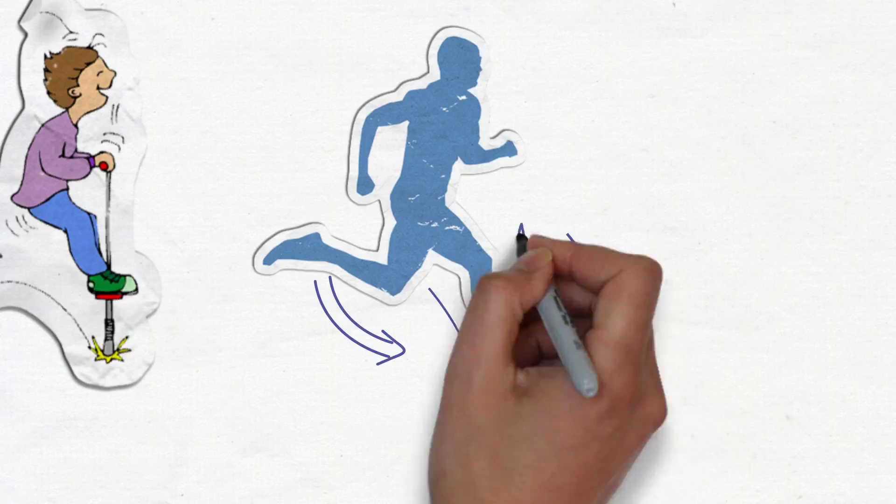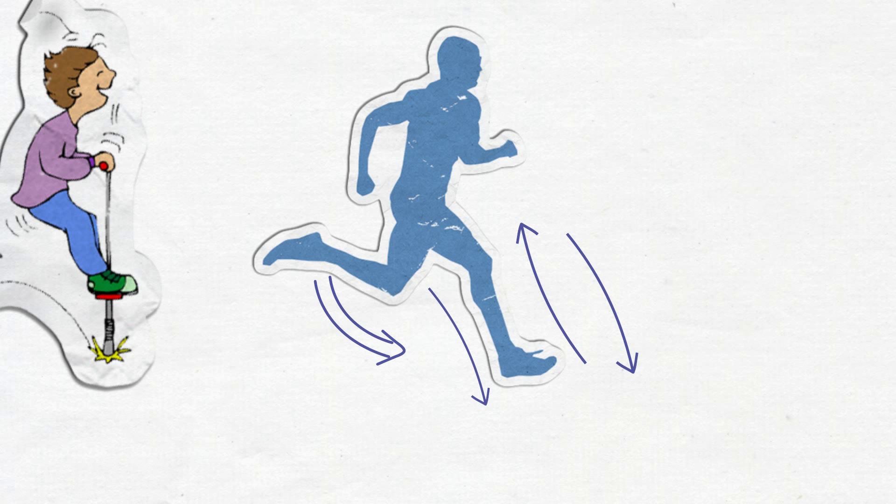When a runner hits the ground, 90% of the force goes vertically to push him up again, while only 5% propels him horizontally.